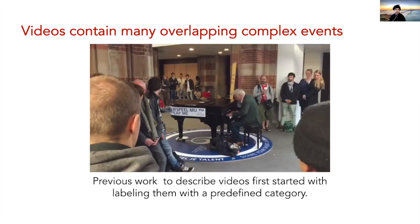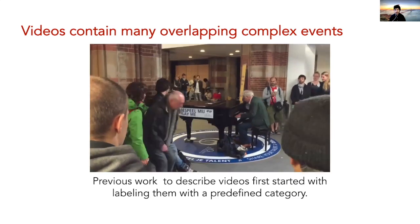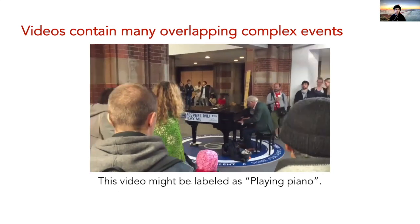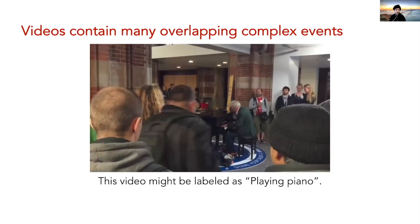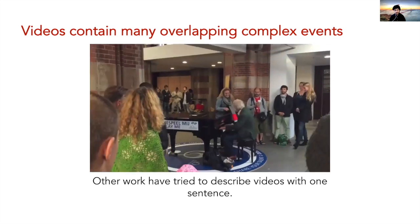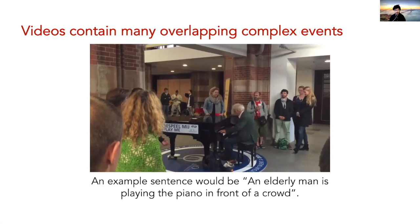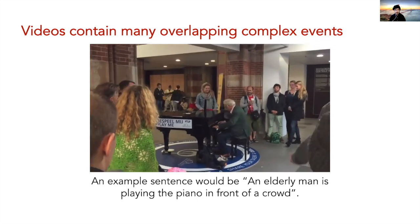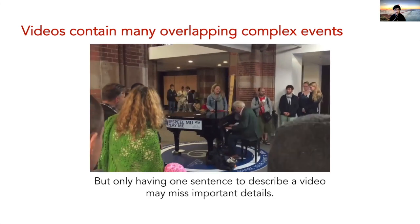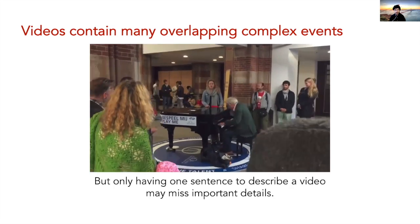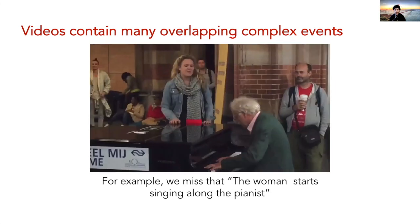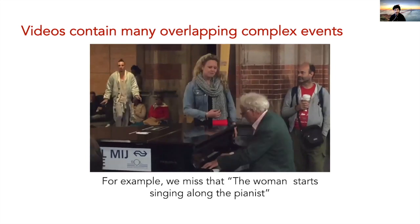Datasets for videos started by primarily focusing on assigning videos with category-level labels, such as playing the piano. And to describe more detailed activities, later datasets incorporated sentence descriptions at the level of the full video, like a man playing a piano in front of a crowd. But a single video-level sentence can miss the complex overlapping events that are happening concurrently. For example, we also have a woman singing along with the elderly man who is playing.